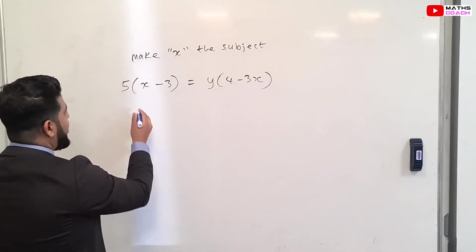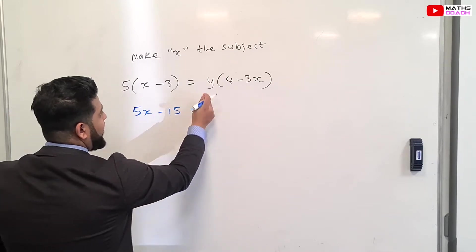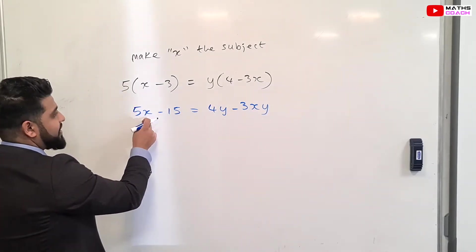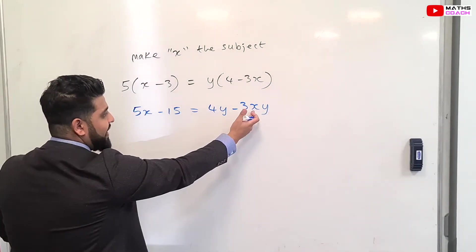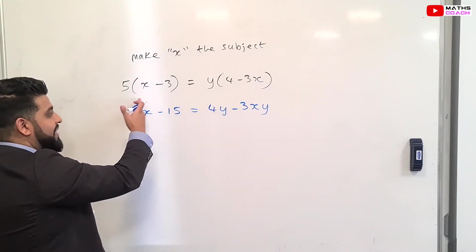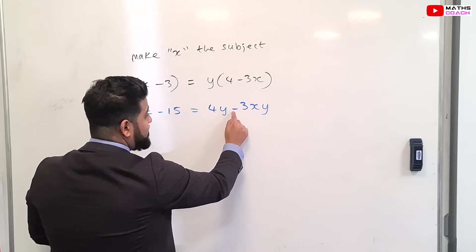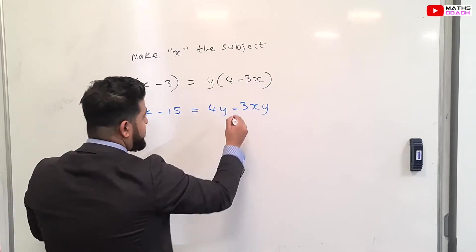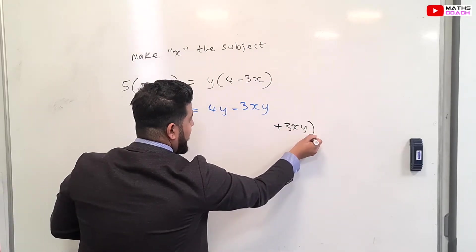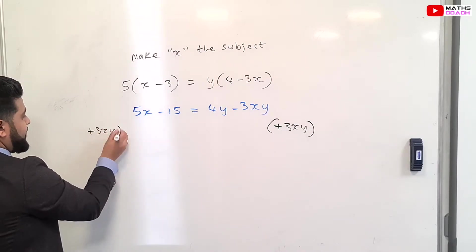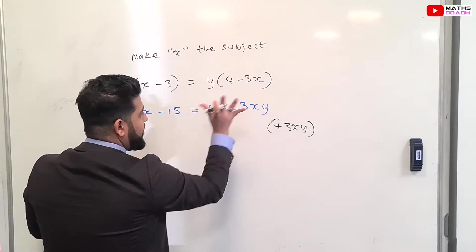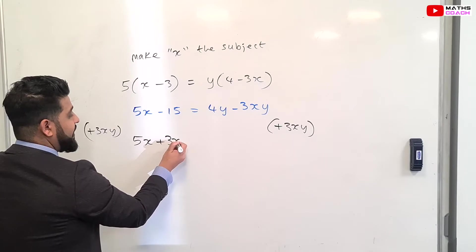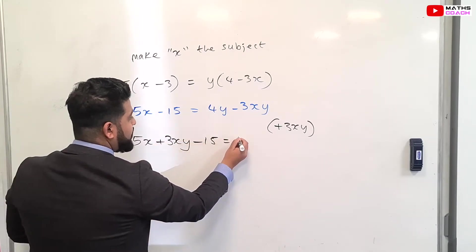When we expand this bracket we get 5X minus 15, and we expand this side we get 4Y minus 3XY. Now we have 5X here and we have minus 3XY here. Because that has X with it, I want to have it on the same side as our 5X. Now minus 3 is smaller so I'm going to bring this over to this side. So if you imagine I will be adding 3XY to both sides because I want to get rid of this minus 3XY on this side.